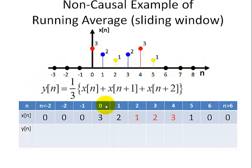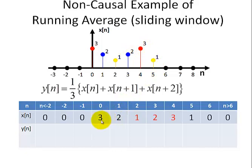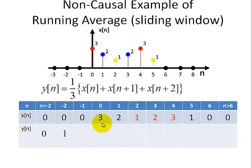Here's our sequence x(n). The first three values are 0 for n less than 0, and also 0 for n less than negative 2. For n greater than 6, it's also equal to 0. Starting at n equals 0, we have values of 3, 2, 1, 2, 3, and 1. Applying the non-causal operation: for n less than negative 2, y(n) equals 0. For n equal to negative 2, we have 3 divided by 3, which equals 1.